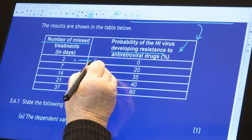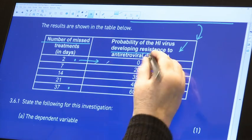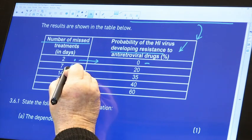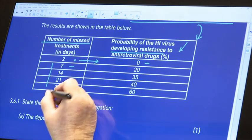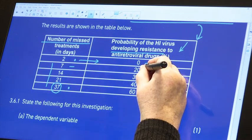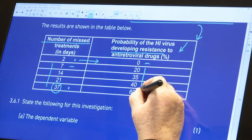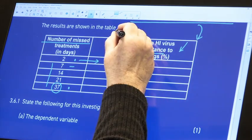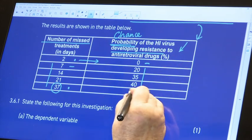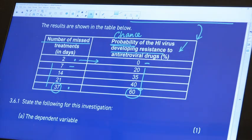Here in this column we have the probability of the HIV virus developing resistance to those antiretroviral drugs. And look here, a person who has missed two days of treatment, there was no resistance of the HIV virus to those antiretroviral drugs. We see that as we increase the number of missed treatments, we dramatically increase the probability or the chance of developing resistance to antiretrovirals.